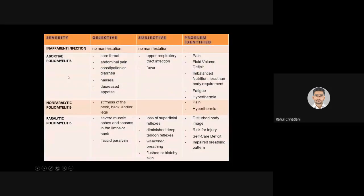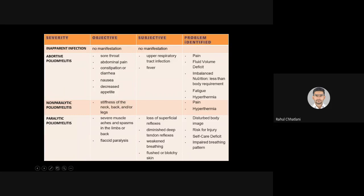Using an assessment table: first is inapparent infection — no manifestation, no signs or symptoms, the person appears normal. Second is abortive or probable infection — the virus remains in the pharynx and GIT, producing symptoms such as sore throat, constipation, diarrhea, nausea, decreased appetite, and fever. This represents upper respiratory tract and GI symptoms. Identified problems include pain, fluid volume deficit, impaired nutrition, fatigue, and hyperthermia.